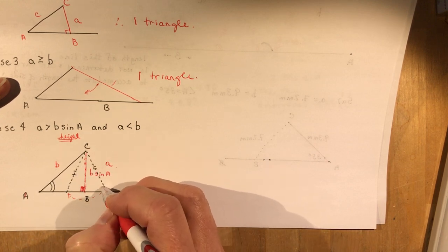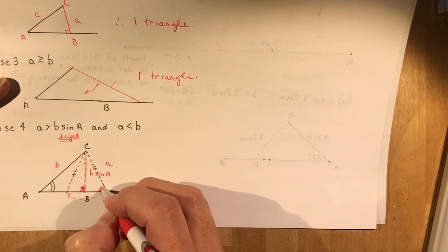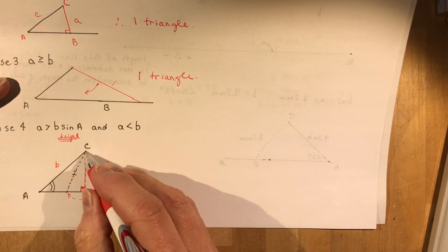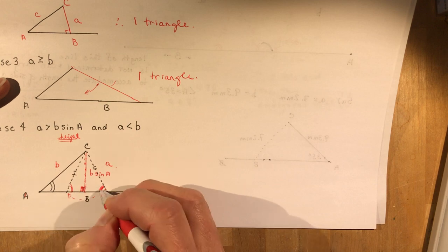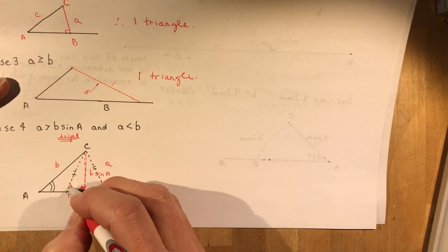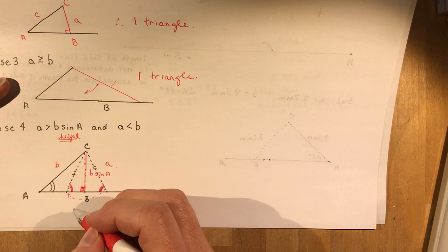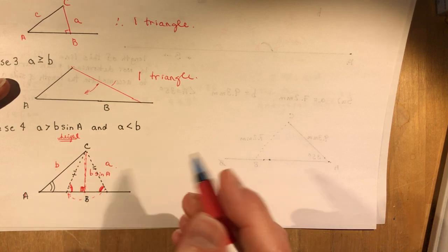So for this example here, remember because this would be an isosceles triangle if I put it here or here, so these angles would be the same. Then this angle here, which is your obtuse angle, is going to be 180 minus that one.